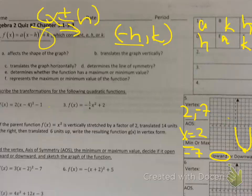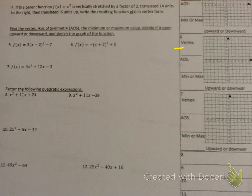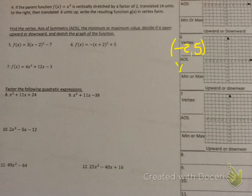Number 6. What's the vertex? Negative 2, 5. So your axis of symmetry should be negative 2. Your max or min should be 5. Since it's a negative in front, that means a reflection — it's facing down — which means you have a max. So your max is 5.